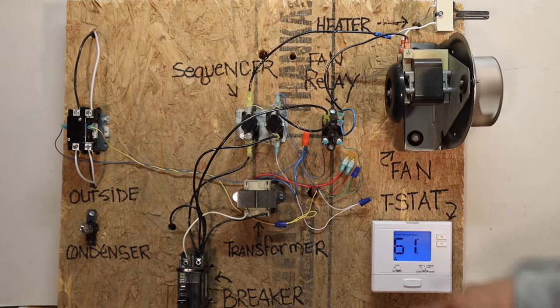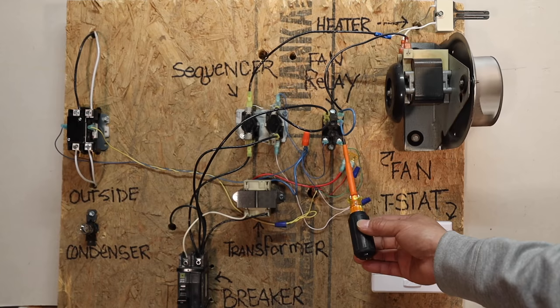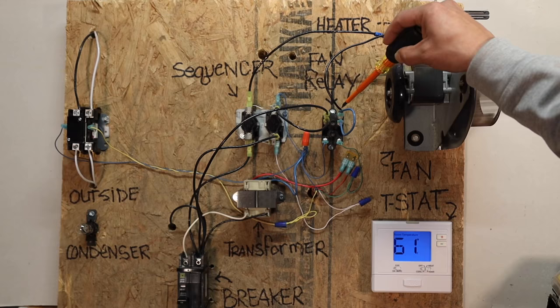When you turn it off, the 24 volts de-energizes from here, this bimetal pulls back down and breaks the circuit up here, and then it stops power from the blower motor.